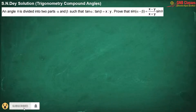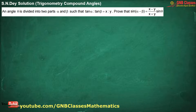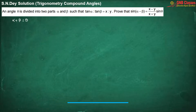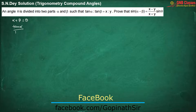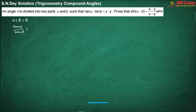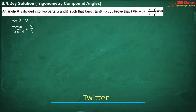In this problem, they have given that theta is divided into two parts as alpha and beta. So we can say that alpha plus beta is nothing but theta. And they have given us tan alpha by tan beta equals to x by y.